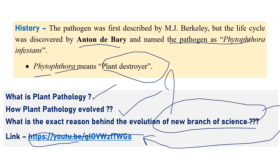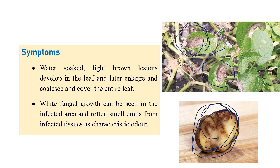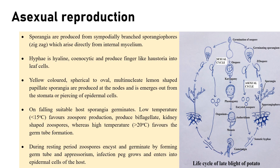Looking at the symptoms: initially water-soaked lesions appear, then they coalesce and blight-like symptoms appear on the leaf. In infected tubers, entire tuber rotting occurs, and it emits a foul smell. These are the general symptoms on leaves and tubers.